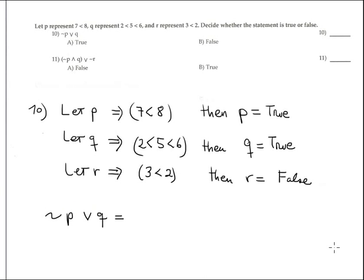Number ten: using three statements — '7 is less than 8' is true, '5 is between 2 and 6' is true, '3 is less than 2' is false. Evaluate: negation P is false, disjunction Q — Q is true — gives true. True conjunction true is true, which corresponds to option A.